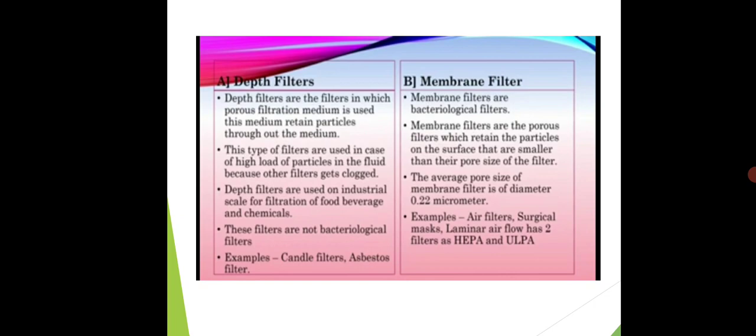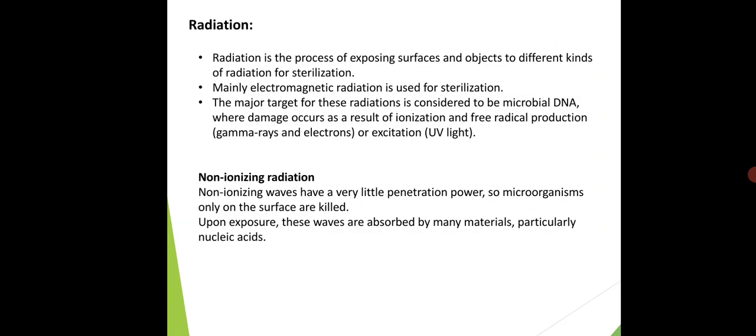To summarize filtration: there are two types — depth filters and membrane filters. Depth filters are not bacteriological filters; membrane filters are bacteriological filters, meaning bacteria can be filtered out. Depth filters retain particles throughout the medium; membrane filters separate out dust particles as well as bacteria. Depth filters are used in food, beverages, and chemicals. Membrane filters are used for water purification. Examples of depth filters are candle and asbestos filters; membrane filter examples include surgical masks and laminar airflow.